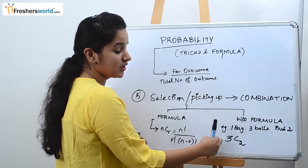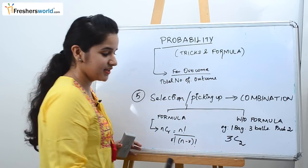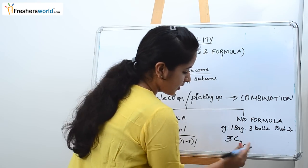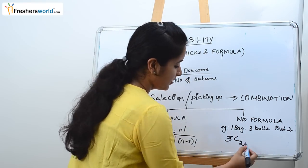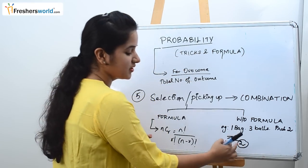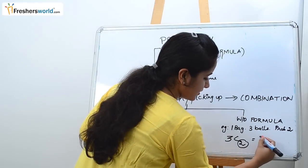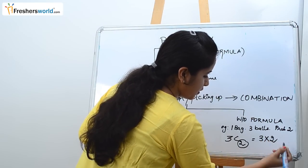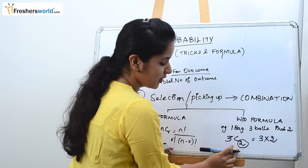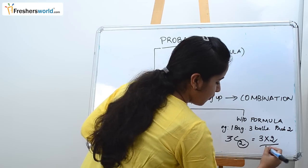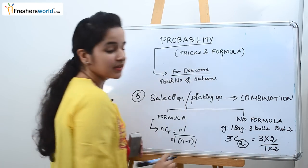So this is the total number of balls that a bag contains and out of which how many balls you need to choose. This shows the number of times this has to be reduced. Three into two. Why only two times you are reducing? Because here it has two divided by two. So one into two. Simple right?